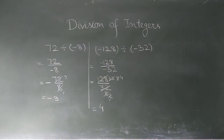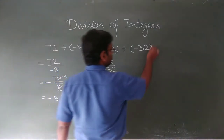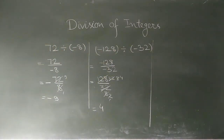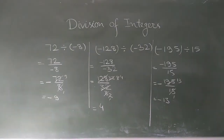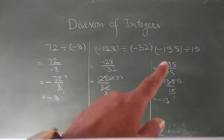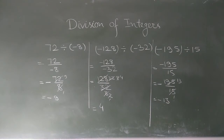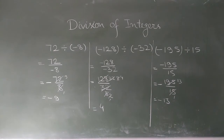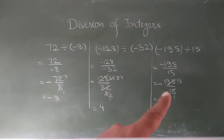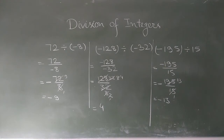Moving to the next example: minus 195 divided by 15. Here the dividend is negative and the divisor is positive, so the result is negative. We write the negative sign and divide 195 by 15 — 15 times 13 equals 195 — so the answer is minus 13.